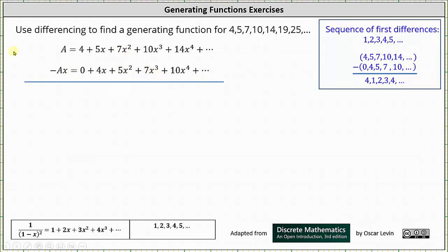And now we subtract the two equations. On the left, we have A minus Ax. On the right, we have 4. And then 5x minus 4x is 1x, 7x squared minus 5x squared is 2x squared, and so on.